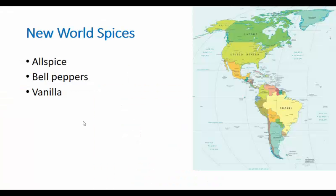Now for new world spices. Until the Americas were well-traveled by Europeans, they didn't have allspice, vanilla, or most importantly, bell peppers. So spiciness in food had to come from black pepper — if you wanted food hot, black pepper or its relatives were what you had. But many people like cooking with other spices, and now I introduce the bell pepper.